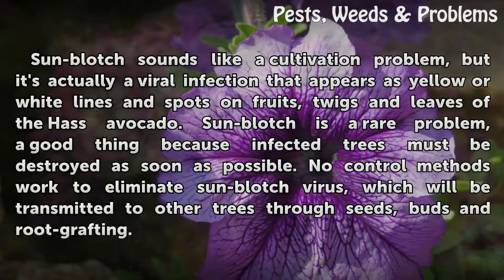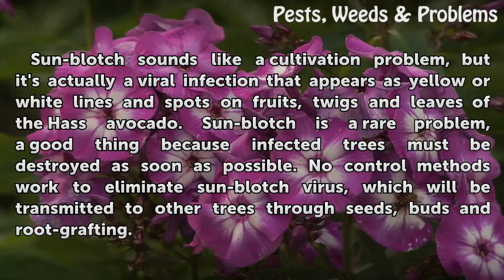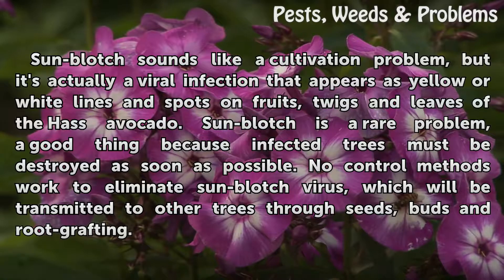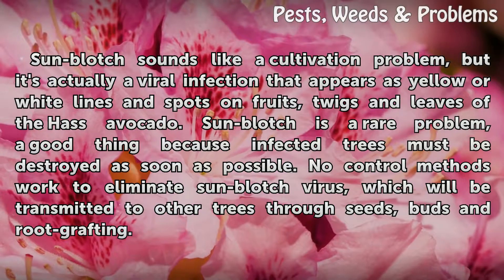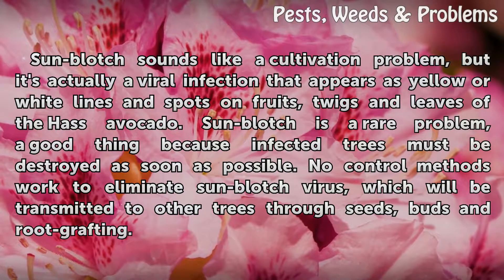Sunblotch sounds like a cultivation problem, but it's actually a viral infection that appears as yellow or white lines and spots on fruits, twigs, and leaves of the Hass avocado. Sunblotch is a rare problem — a good thing, because infected trees must be destroyed as soon as possible. No control methods work to eliminate sunblotch virus, which will be transmitted to other trees through seeds, buds, and root grafting.